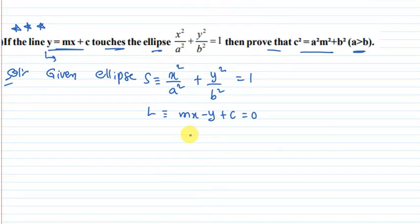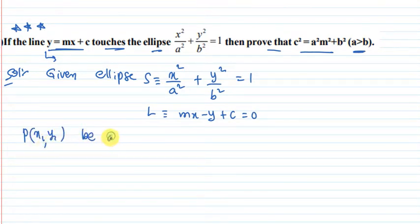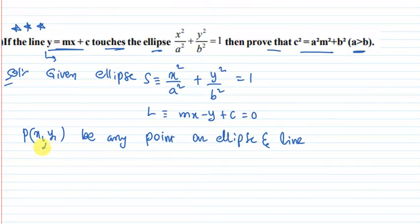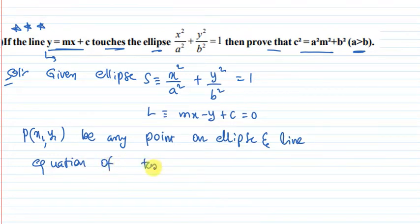There are two possibilities. The point of contact is P(x1, y1), which is any point on both the ellipse and the line. So if the line touches the ellipse at that point, we consider that point of contact.